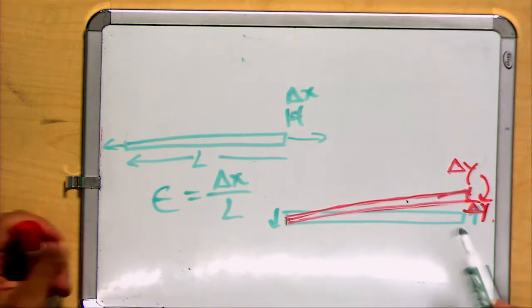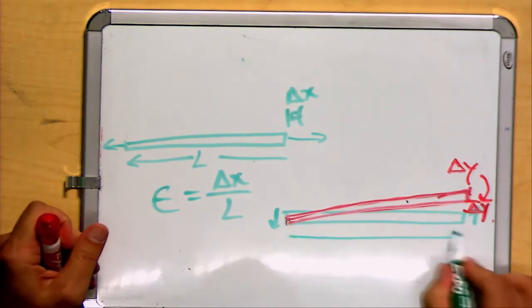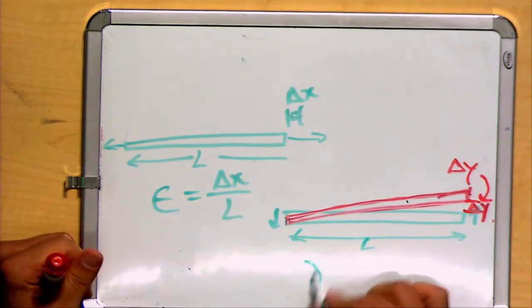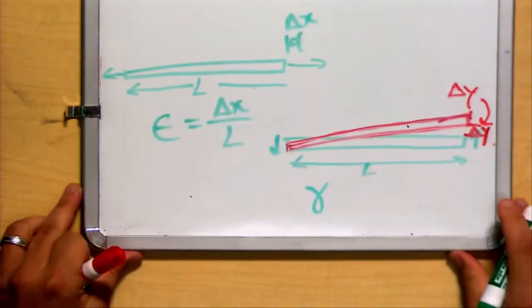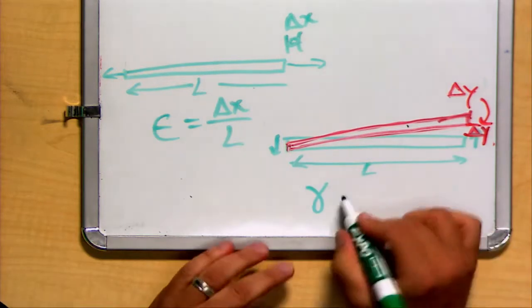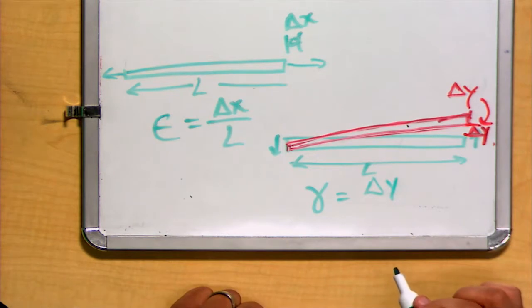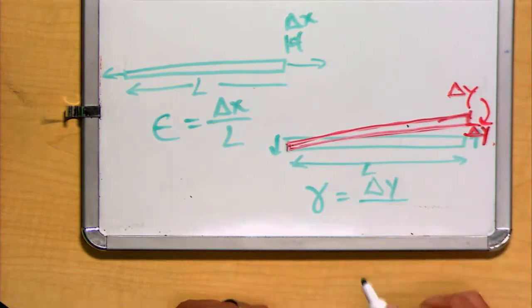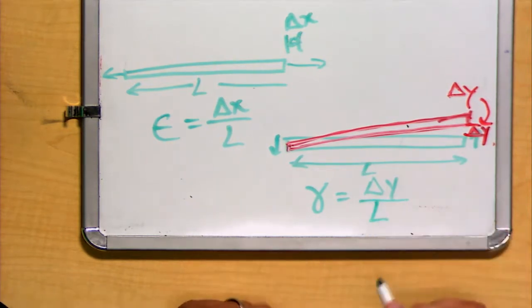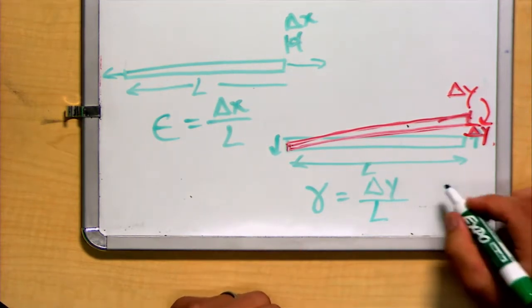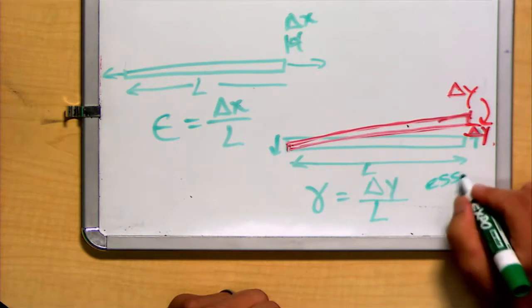We consider the original length of the beam and define shear strain with the Greek letter gamma as the ratio between this change in the y dimension, parallel to the application of the force, divided by that original length. Notice this is essentially an angle for very small values of delta y.